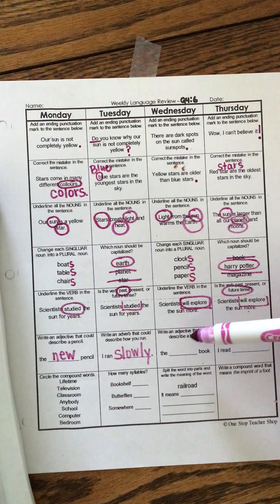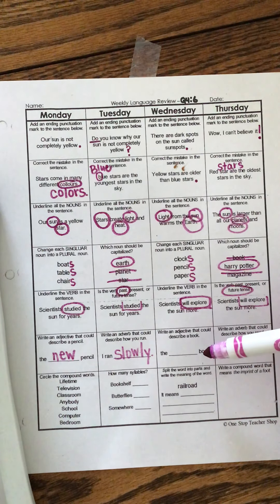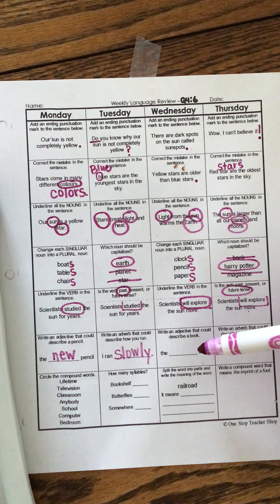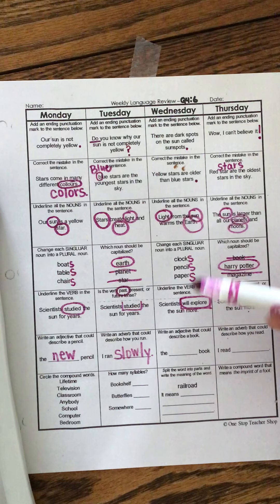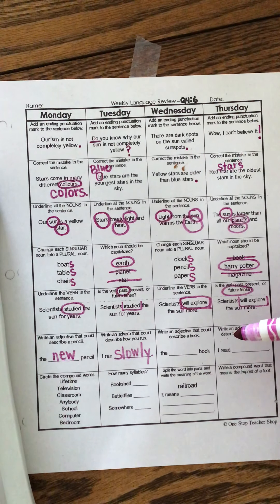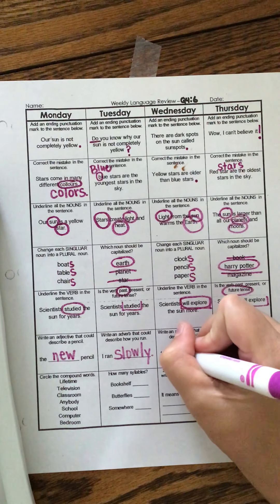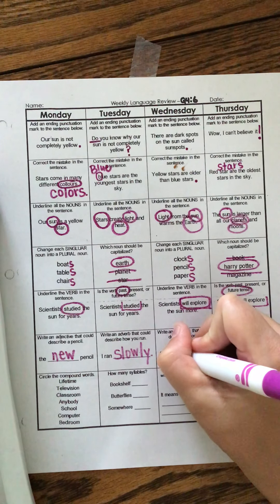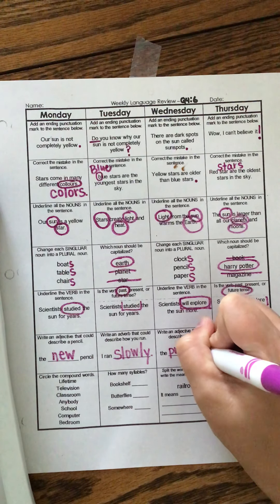Write an adjective that could describe a book. Any word that can describe a book. Okay. So it could be the thin book, the thick book, the big book, the small book, the boring book, the scary book, anything you want. So I'm going to do the princess book.